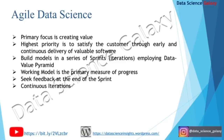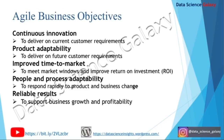This is the essence of agile data science. The agile business objectives are: continuous innovation, product adaptability, improved time to market, people and process adaptability, and reliable results. For continuous innovation, we deliver on current customer requirements continuously. We must also cater to future customer requirements and demand by being adaptable, agile, and scalable.